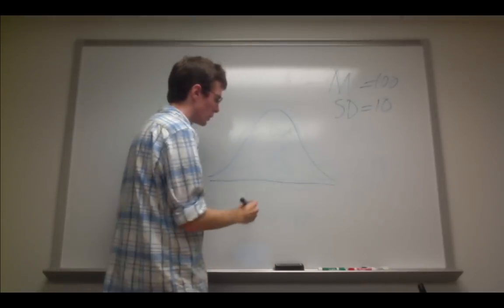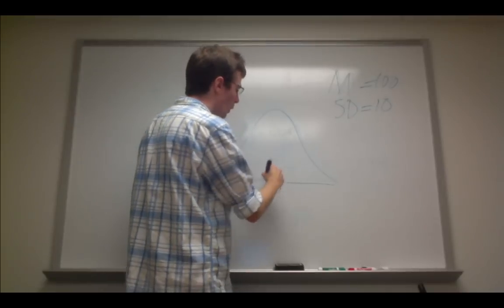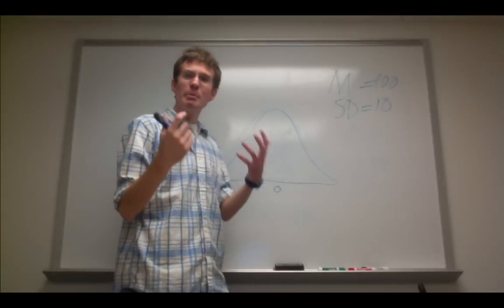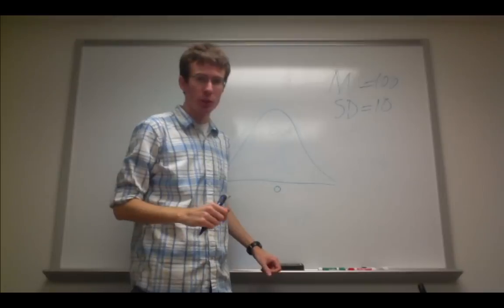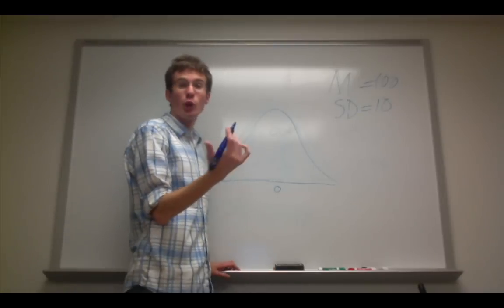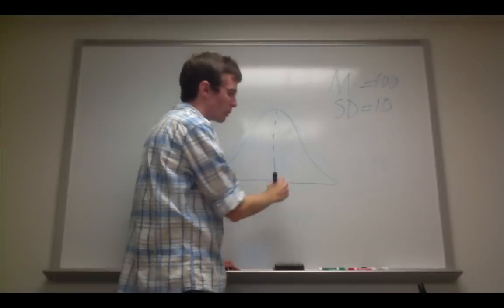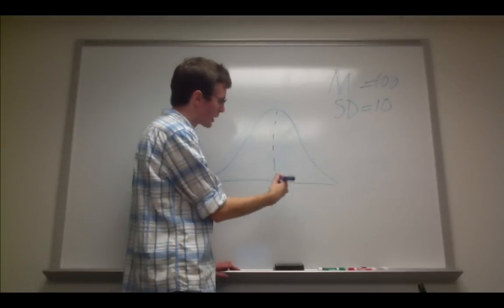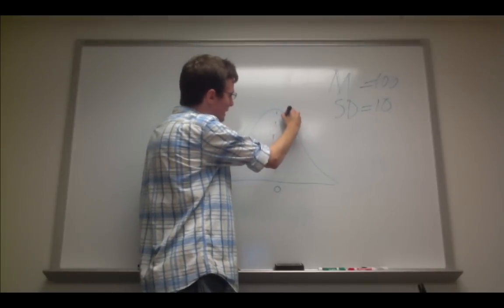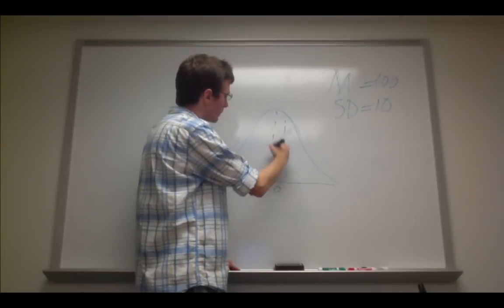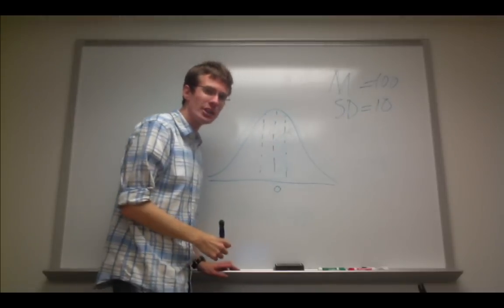So we draw our normal curve again, it's centered at zero, and if we want the middle percentage of this distribution, the middle 38% in this example, that would mean, since it's a perfectly symmetrical distribution, we would want 19% of the distribution over here and 19% of the distribution over here.